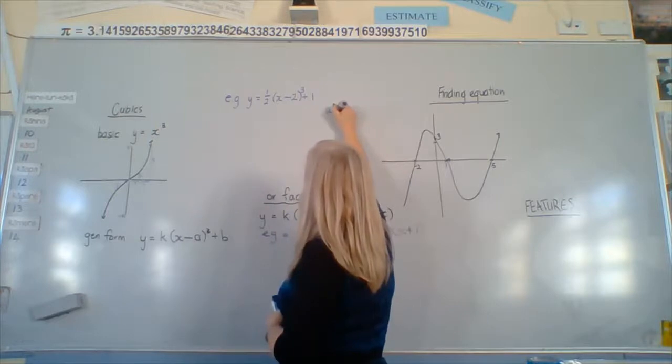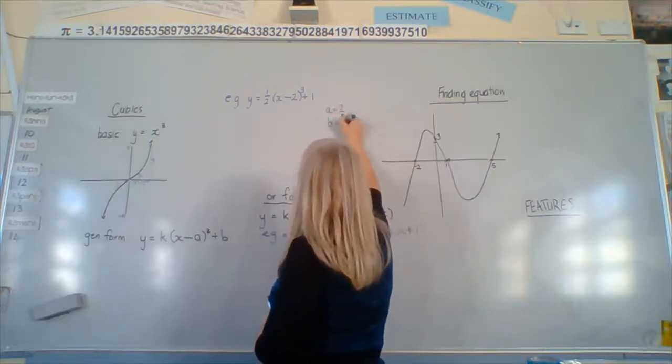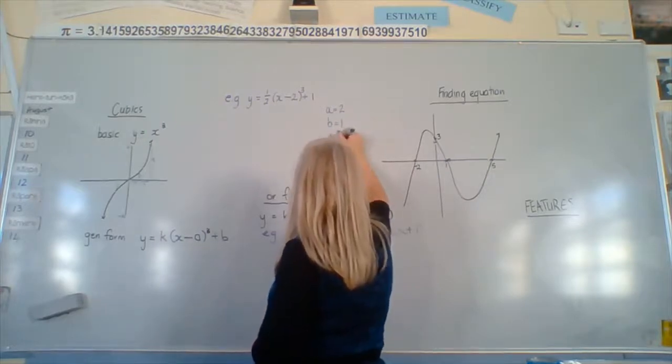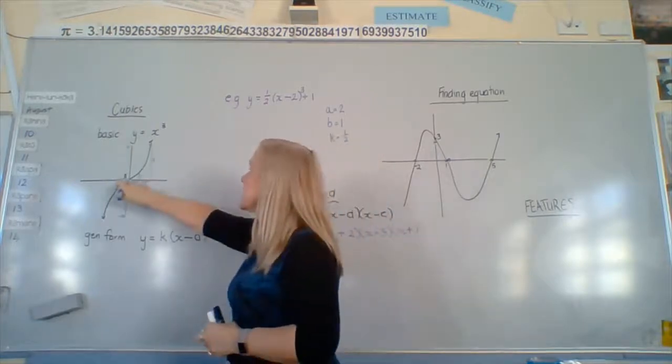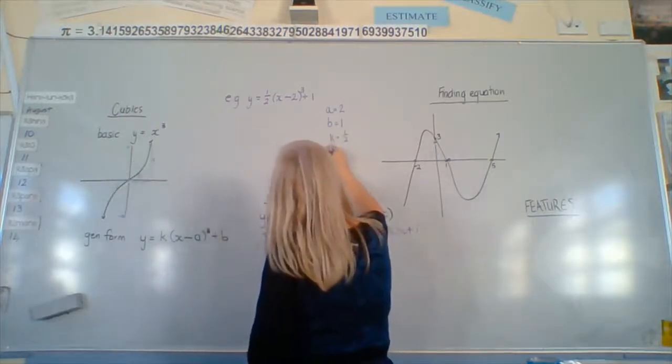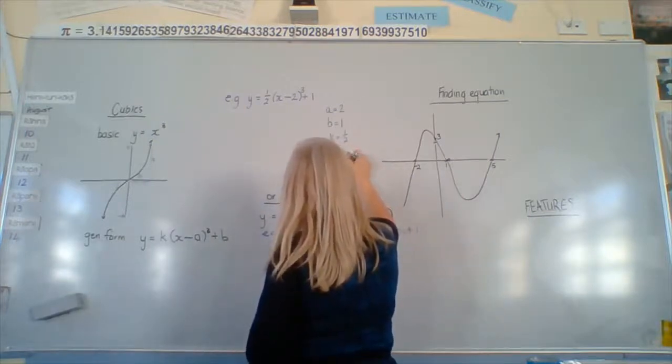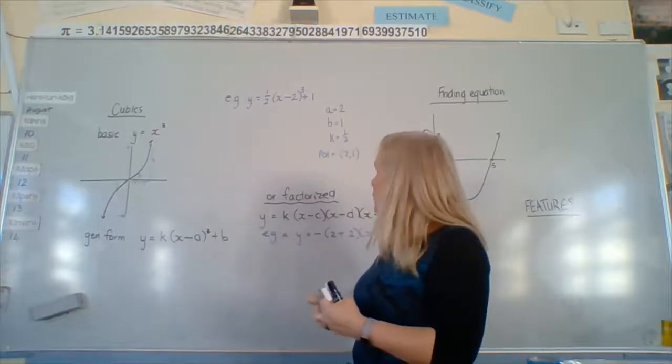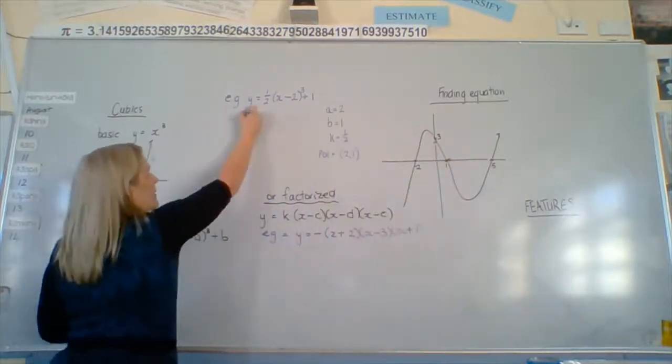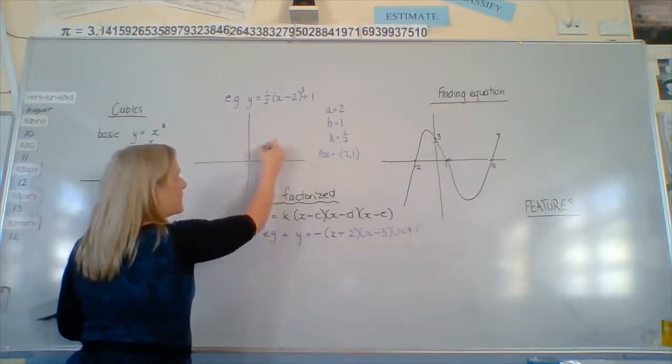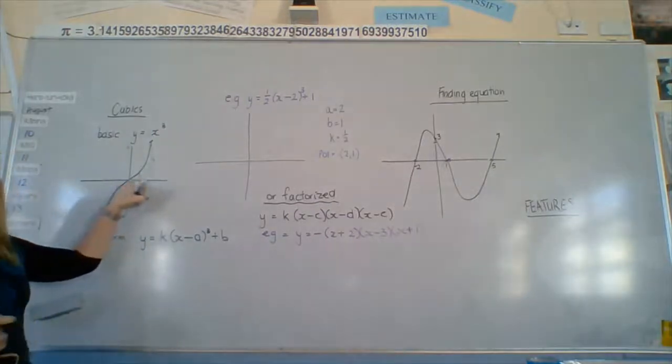So a equals 2, b equals 1, and k equals 1/2. So that gives us our point of interest. I'm going to call it a POI because it's not a vertex. So our point of interest will equal 2, 1. So when we draw the graph of this, 2, 1 is here.